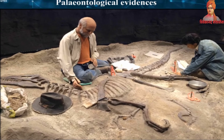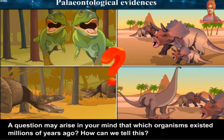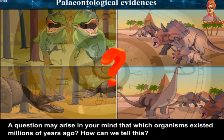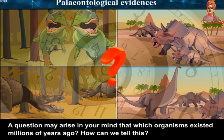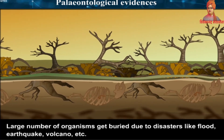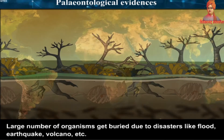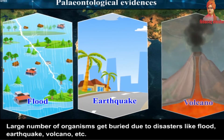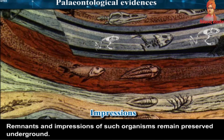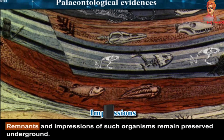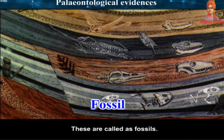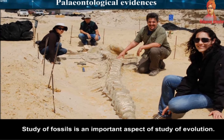Paleontological Evidences. Which organisms existed millions of years ago? This secret has been hidden in the earth. Large numbers of organisms get buried due to disasters like flood, earthquake, volcano, etc. Remnants and impressions of such organisms remain preserved underground. These are called fossils. Study of fossils is an important aspect of the study of evolution.